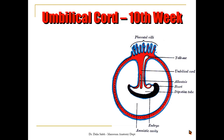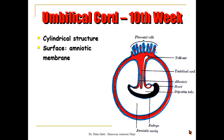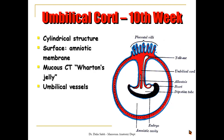At the tenth week of development, the umbilical cord looks cylindrical in shape. Its surface is covered by the amnion — after expansion of the amniotic cavity, the amnion covers the outside of the umbilical cord. The connecting stalk forms what's called Wharton's Jelly, which contains the umbilical vessels — two umbilical arteries and one umbilical vein. It also contains the allantois, the yolk sac, and the vitello-intestinal duct, since the intestine is now formed inside the embryo and connected to the definitive yolk sac.